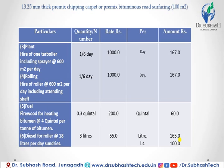For plant: hire of one tar-boiler including sprayer at 600 meter square per day — the per day rate is 1,000 rupees, and 1/6 day is required, so 1/6 multiplied by 1,000 equals 167 rupees. For rolling: hire of roller at 600 meter square per day, rate 1,000 rupees, so 1,000 multiplied by 1/6 gives a total rolling amount of 167 rupees.